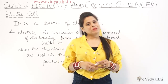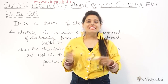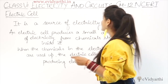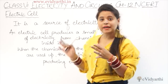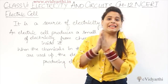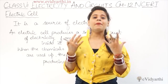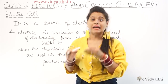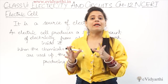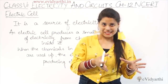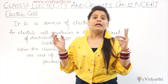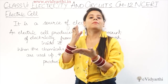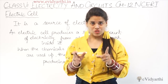Hello everyone, this is Mansi from Evidyanti George. Today in this session we start our next chapter, which is Chapter 12. The chapter name is Electricity and Circuits. So we will read about what circuits are in this chapter. But first, you should know what electricity is. If you have a light, TV, washing machine or anything like that, they work through electricity. If there is a power cut, that means when the electricity supply is closed, all these things stop. So what is electricity?